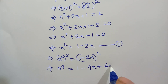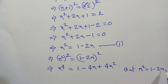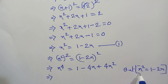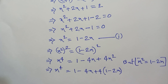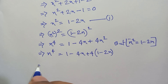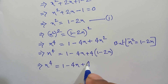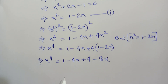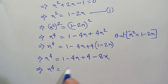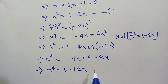We already know from Equation 1 that x² = 1 - 2x. So we substitute: x⁴ = 1 - 4x + 4(1 - 2x) = 1 - 4x + 4 - 8x. Therefore x⁴ = 5 - 12x. This is Equation 2.